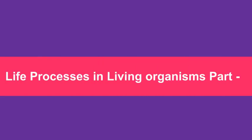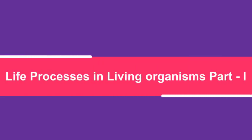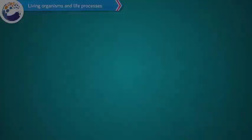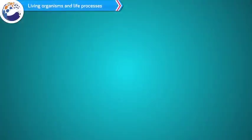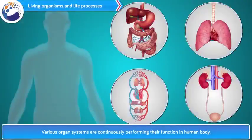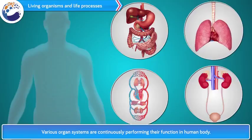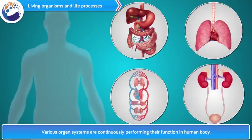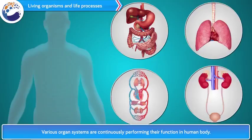Chapter 2: Life Processes in Living Organisms, Part 1. Various organ systems are continuously performing their function in the human body. Various systems like digestive, respiratory, circulatory, excretory system and various internal and external organs perform different functions but through coordination.